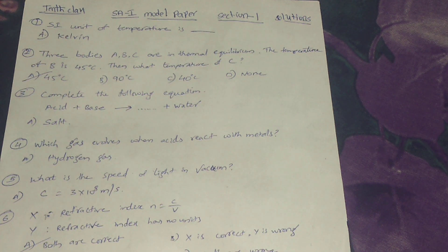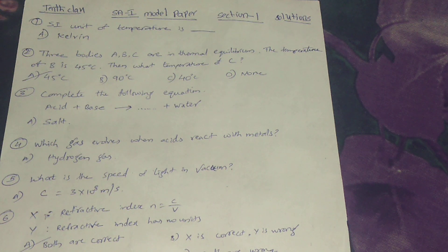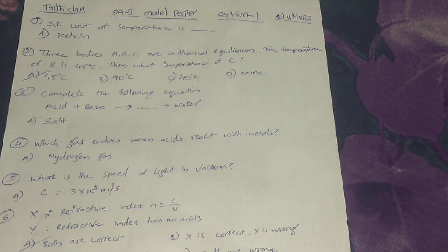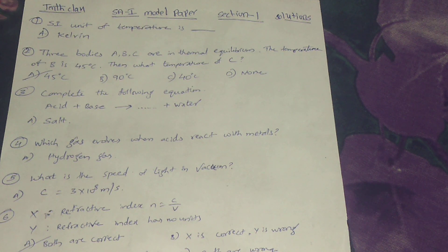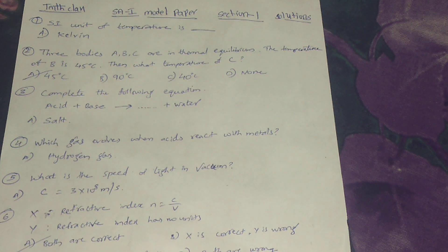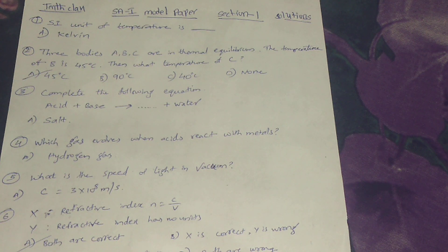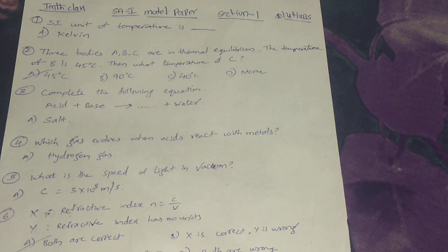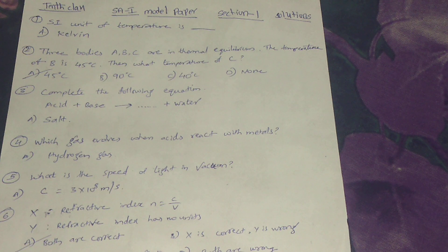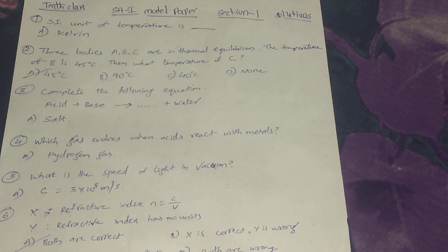First question, SI unit of temperature is? Answer is Kelvin. Second, three bodies A, B, C are in thermal equilibrium. The temperature of B is 45 degrees Celsius. Then what is the temperature of C? Answer is 45 degrees Celsius.